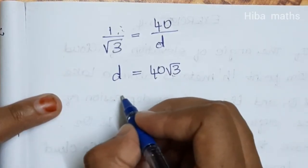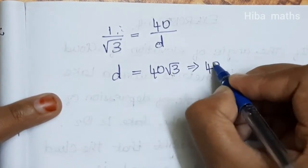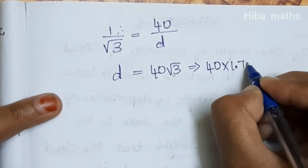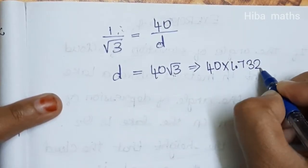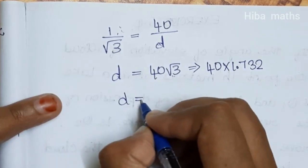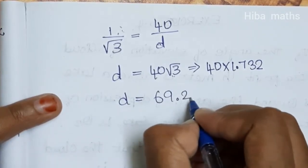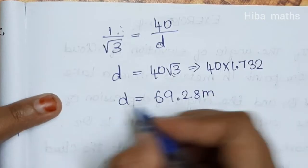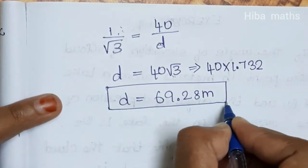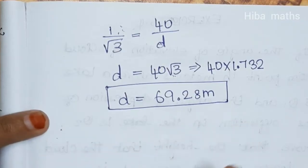We know root 3 equals 1.732, so D equals 40 into 1.732, which equals 69.28 meters. This is the distance between the hill and the ship.